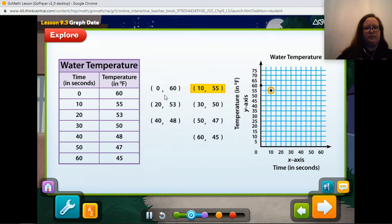Next, move along the X axis to 10, and up the Y axis to 55. For the next point, move to 20 on the X axis, and up to 53 on the Y axis. Next, locate 30 on the X axis, and move up to 50 on the Y axis. Move to 40 on the X axis, and up to 48 on the Y axis. Next, find 50 on the X axis, and 47 on the Y axis. Finally, move to 60 on the X axis, and 45 on the Y axis.